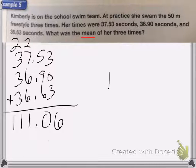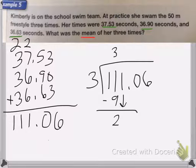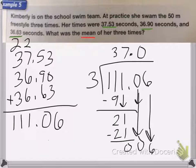Now when I'm finding the mean, I'm going to divide my time by three, because there were three times. So three goes into 11, three times, that's nine, subtract it. 11 minus nine is two, bring down the one. Three goes into 21 seven times, that's 21. We get a zero, we bring down the zero. Don't forget the decimal point, the decimal point goes straight up. Three goes into zero, zero times, bring down the six, three goes into six, two times. So the average of her three times is 37.02 seconds.